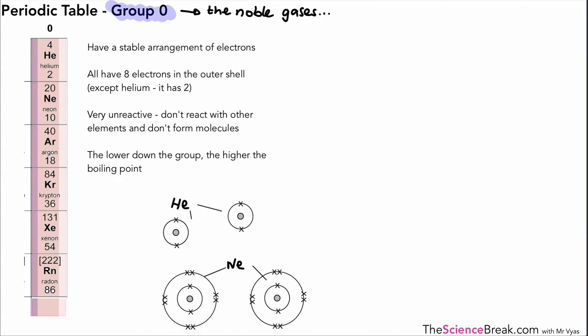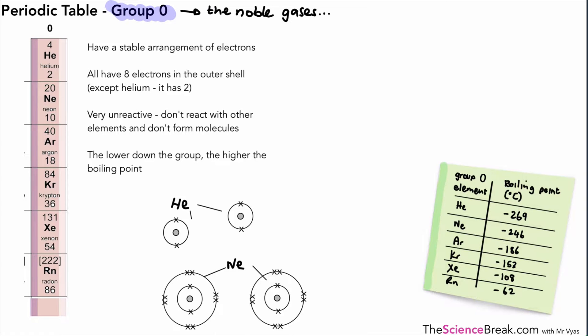We haven't talked about that yet, but what do we mean? This is a characteristic of Group 0. So if we were to look at some boiling points for Group 0, they would look a bit like this.